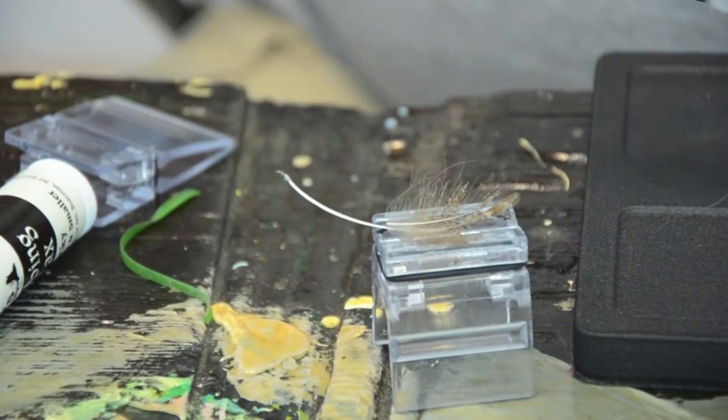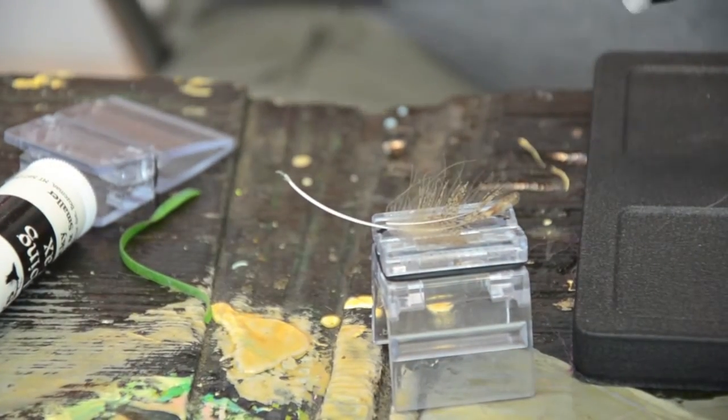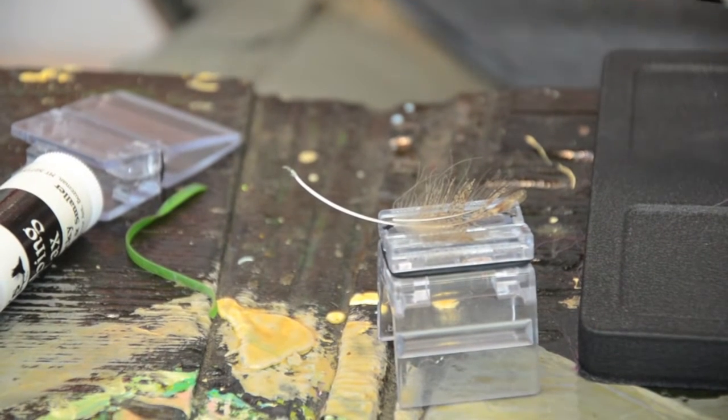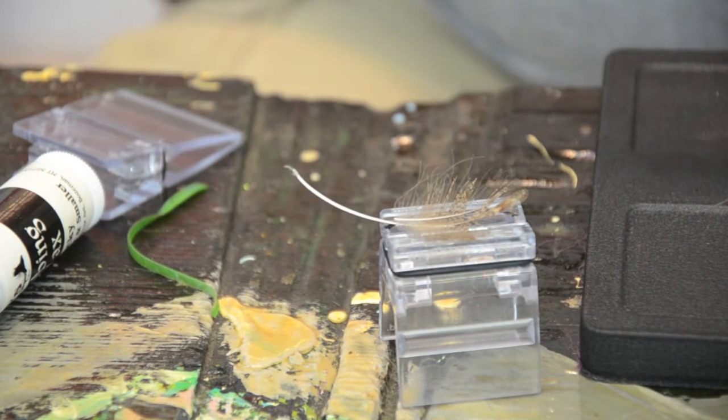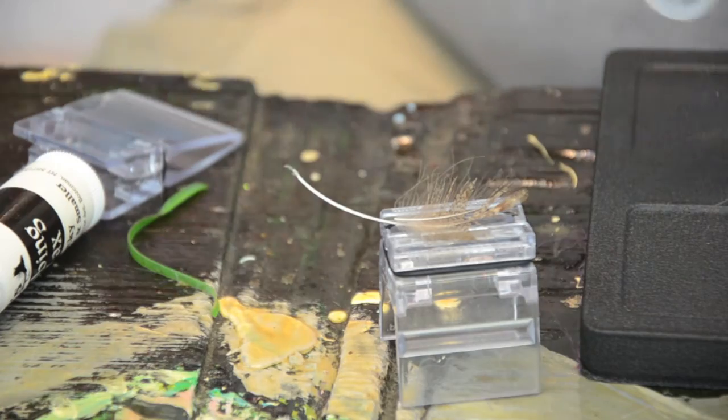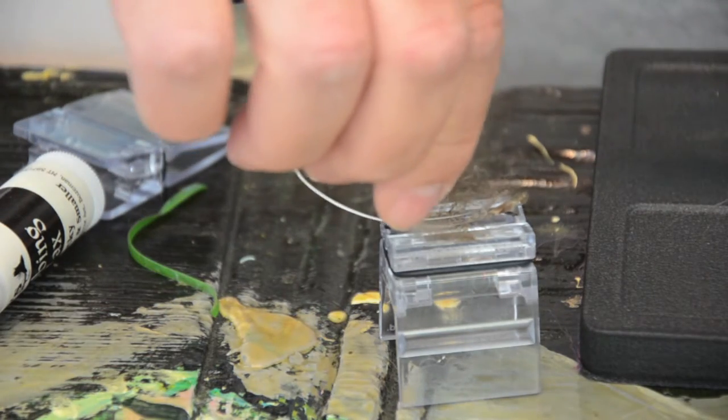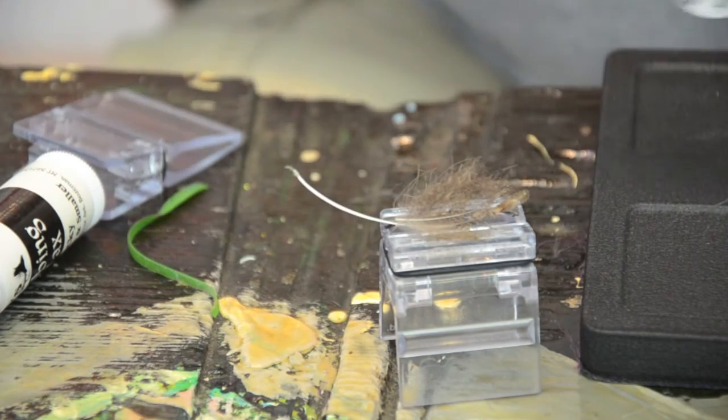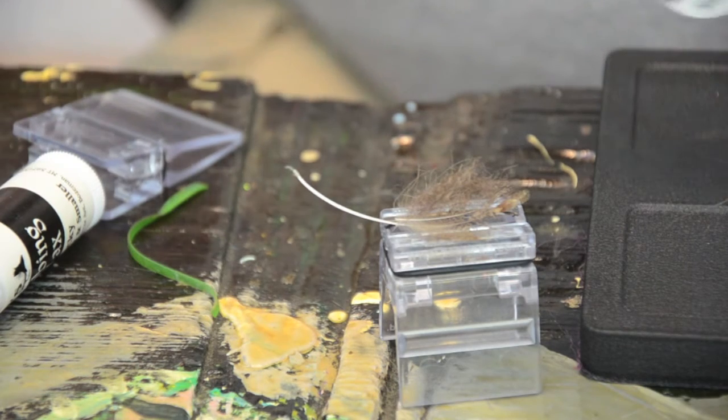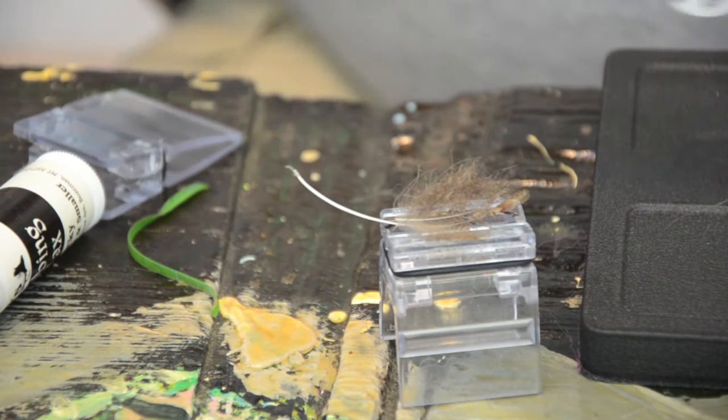And then I'm going to lay a little Hare's ear dubbing. I like a gray Hare's ear. Now you can get the full mask where you can buy and grind it yourself in your coffee grinder, which is what I like to do because I like a lot of guard hairs in mine. Or you can buy the pre-packaged stuff, which works fine.